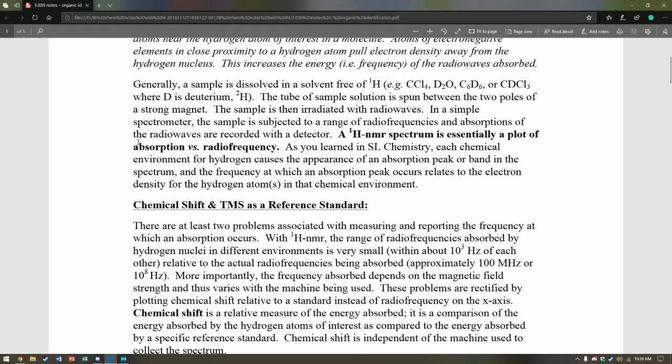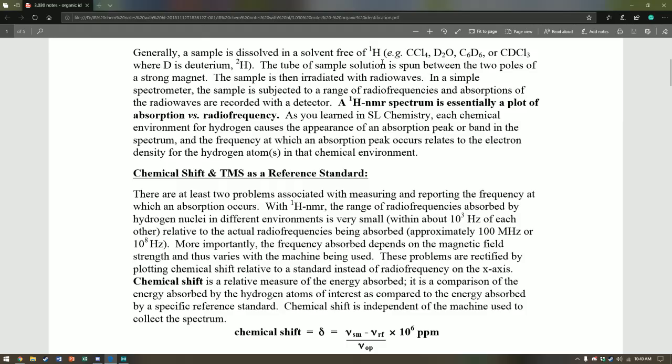Generally, a sample is dissolved free of protons, so CCl4, D2O, C6D6, where D is deuterium. The tube of the sample solution is spun between the two poles of a strong magnet, as I described in my last video. Then it's irradiated with radio waves, and in a simple spectrometer, the sample is subjected to a range of frequencies and absorptions which are recorded with a detector.